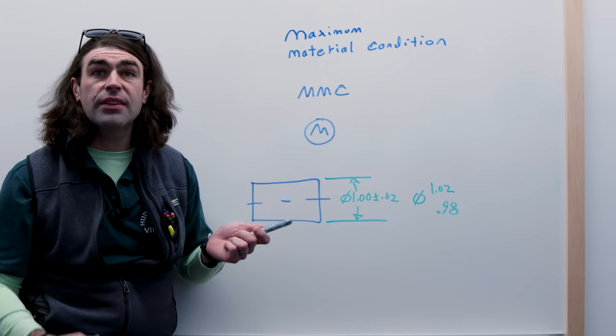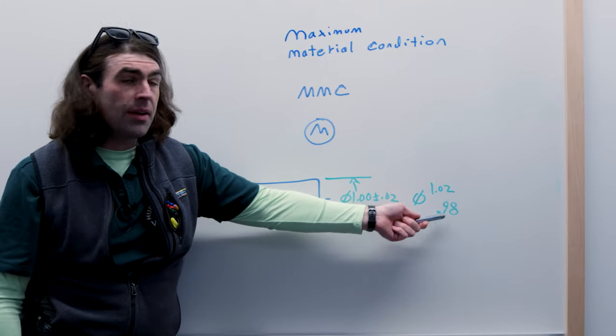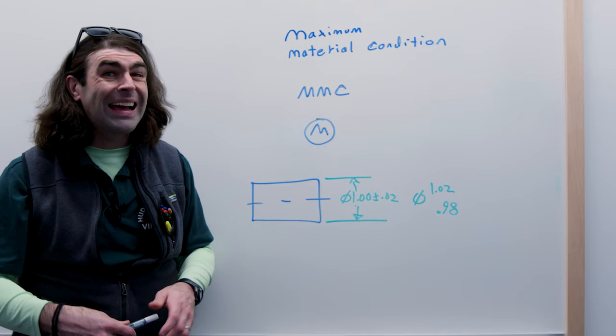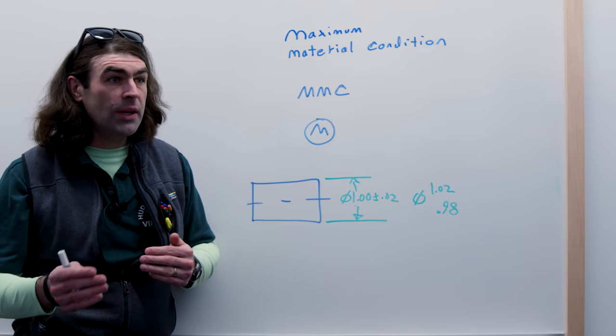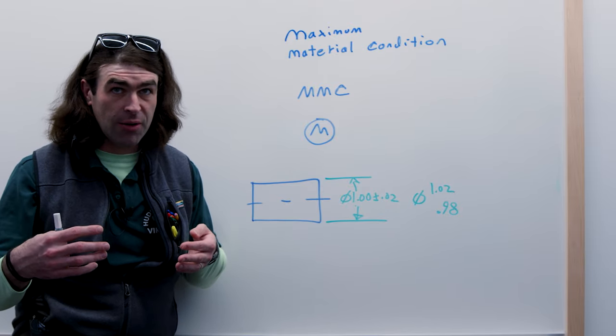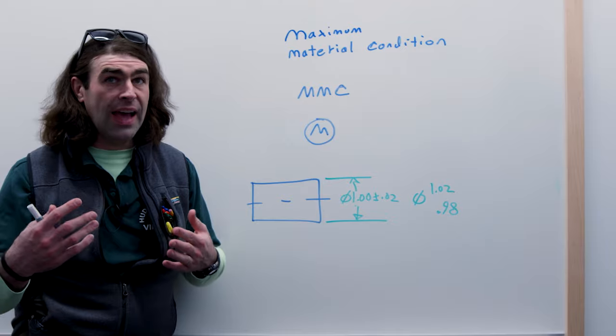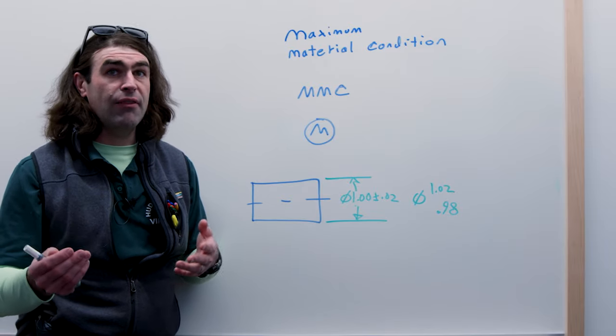Our LMC is the opposite. It's going to be when the feature has the least material. Another way to think of it is which side makes it heavier - which limit of the size tends to make the part have more mass and be heavier.